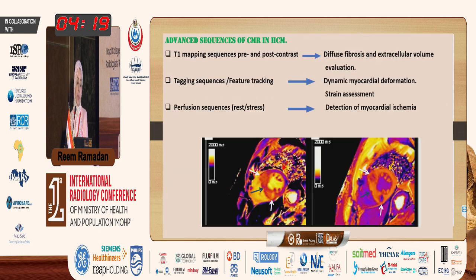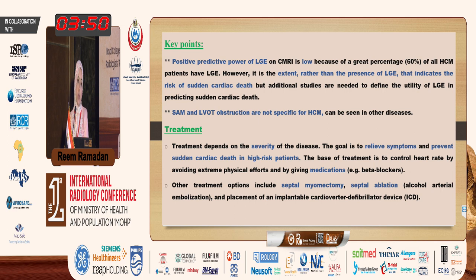The advanced sequences of CMR in HCM include T1 mapping — pre- and post-contrast — to detect the extent of fibrosis and extracellular volume evaluation; tagging sequences and feature tracking for dynamic myocardial deformation and strain assessment; and perfusion sequences for detection of myocardial ischemia. Two key points: First, the positive predictive power of late gadolinium enhancement is low because about 60 percent of HCM patients have it — it is the extent rather than the presence that indicates risk of sudden cardiac death. Second, SAM and LVOT obstruction are not specific for HCM and can be seen in other conditions.